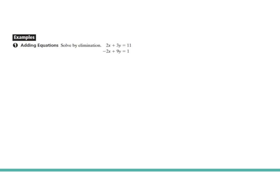So if you look at these two equations, we've got 2x plus 3y equals 11, and negative 2x plus 9y equals 1. If we were to just add those two equations together, notice how they're both in the same form.